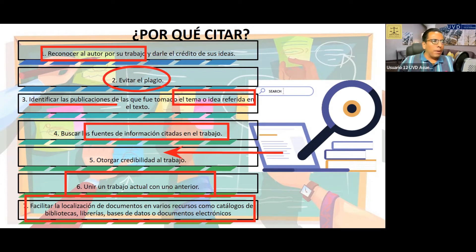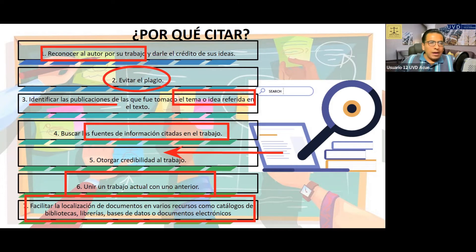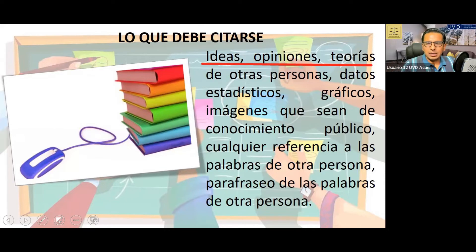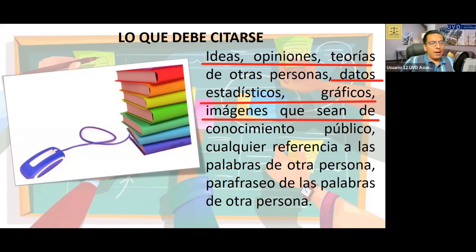Seis: se une el trabajo con otro anterior en relación a estas notas. Siete: facilita la localización de documentos o recursos como catálogos, bibliotecas, librerías, bases de datos o documentos electrónicos. Muchos llegan inclusive a colocar el número de localización dentro de la biblioteca. ¿Qué se va a citar? Opiniones, ideas, teorías de otras personas; datos estadísticos, geográficos, imágenes de conocimiento público; y cualquier referencia a palabras de otras personas o parafraseo de las palabras de otra persona.